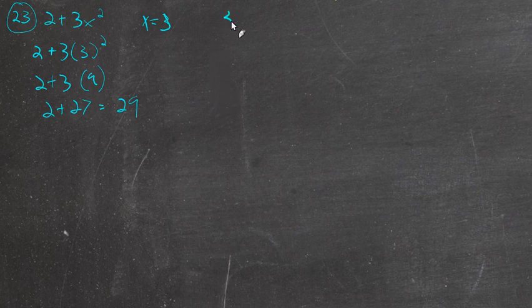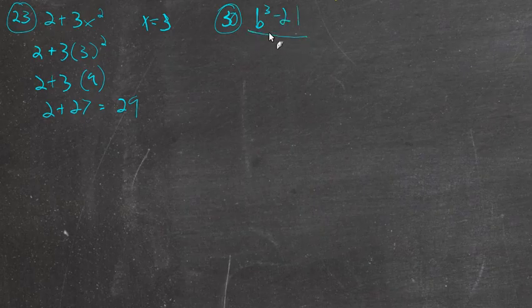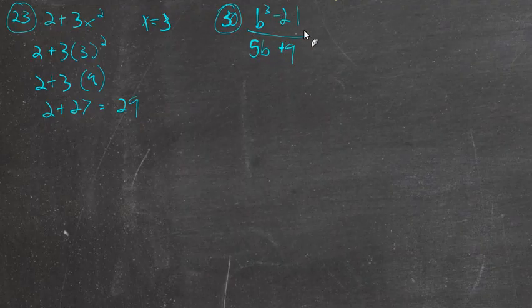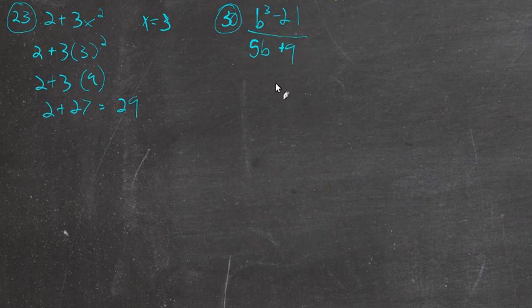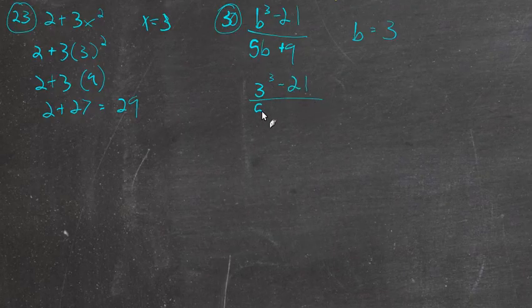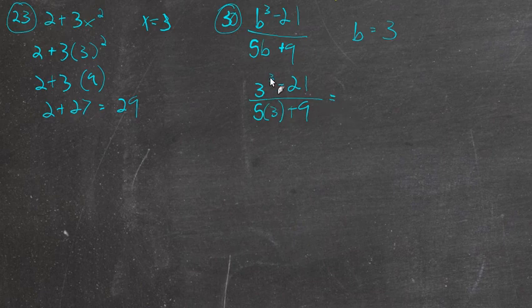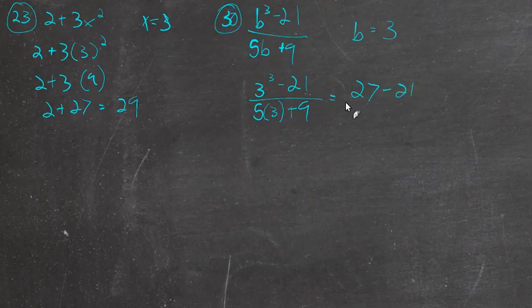Number 30. So whoever wrote this down was being very specific in what they wanted. They want this quantity divided by this quantity. They were very specific about that. And they want to know what this would equal when b is 3. So we've got 3 to the third minus 21 over 5 times 3 plus 9. Okay. So if we were to just strictly follow the order of operations, it's telling us 3 to the third first. That's exponents first. It's 27.